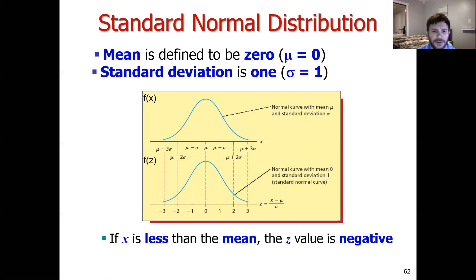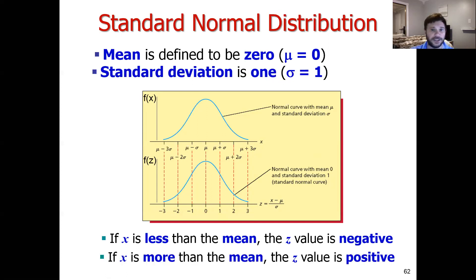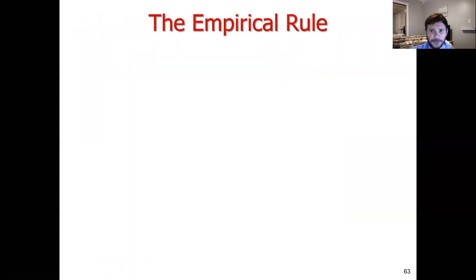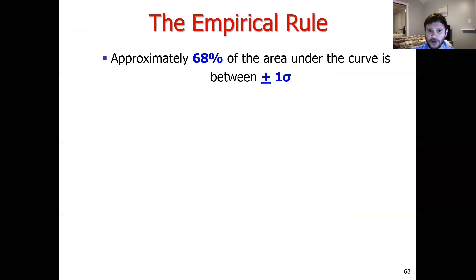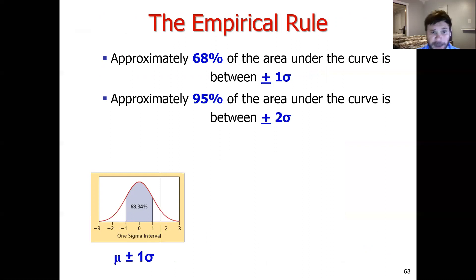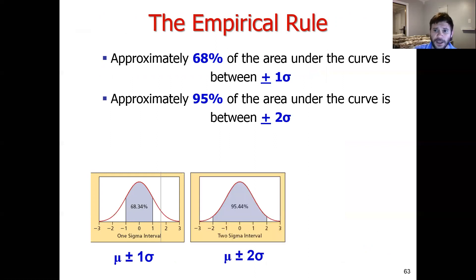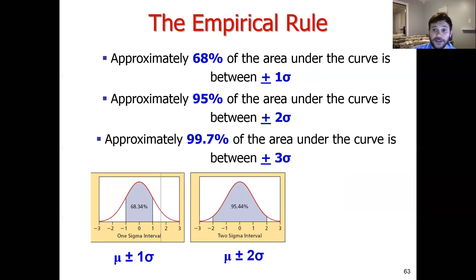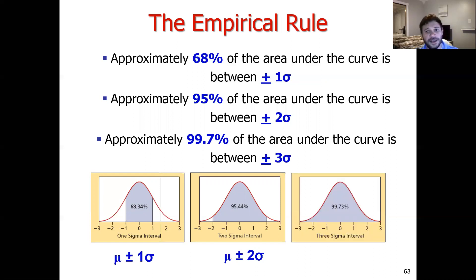Note that if X is smaller than the mean, the transformed Z values will be negative, and if X is above the mean, Z values will be positive. Applying the empirical rule: approximately 68% of the area under the curve is within one standard deviation of the mean, approximately 95% is within two standard deviations, and approximately 99.7% is within three standard deviations. If you see an observation more than two or three standard deviations away from the mean, that tells you it's a very rare thing to observe given a normal distribution.